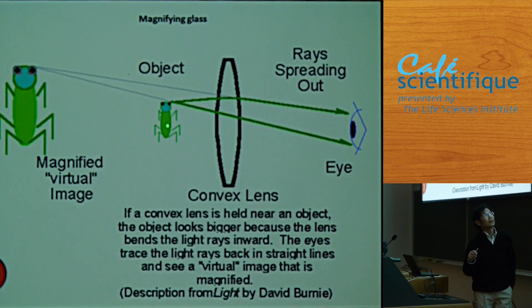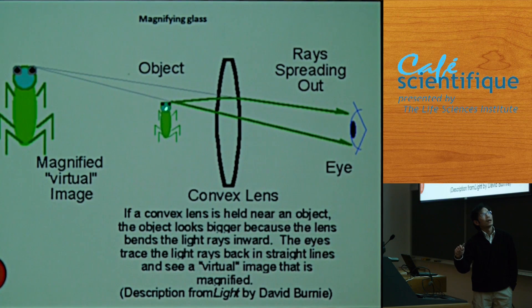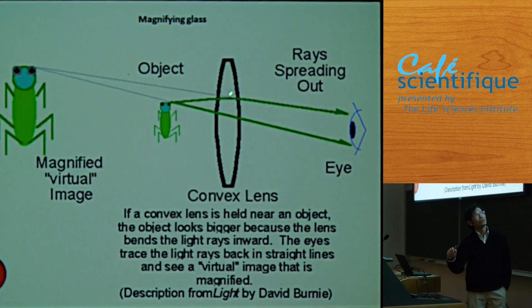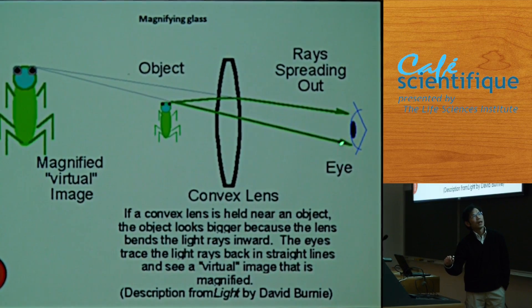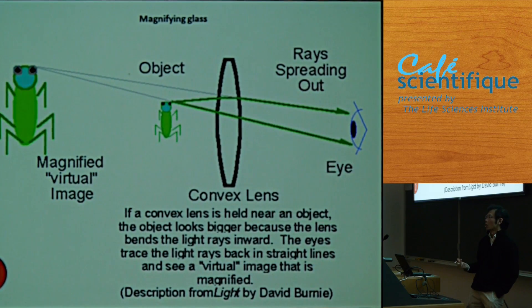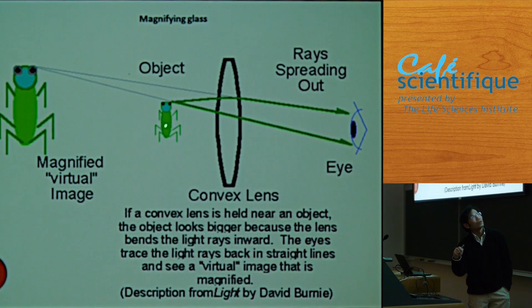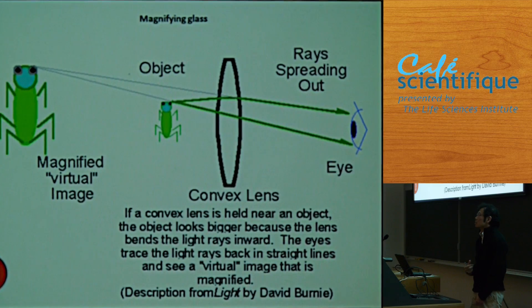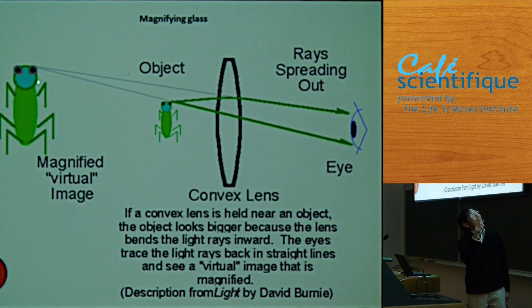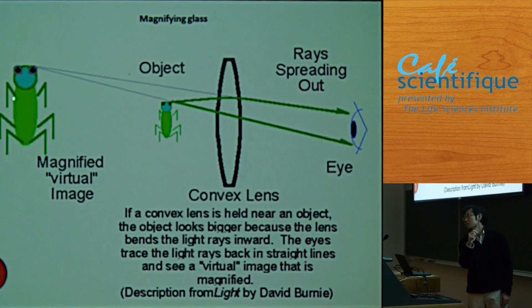So now if I have a bar here and this is my lens, the light that goes through the center would just go straight through. The light parallel to the lens would go to the focus. So the human eye would trace back this light and think the object is here, and it appears bigger. This is how a magnifying glass works. If we put the object within the focus of a lens, we form a virtual image. The virtual image means the light is not really coming from there — it looks like an image is there, but there's actually nothing there.